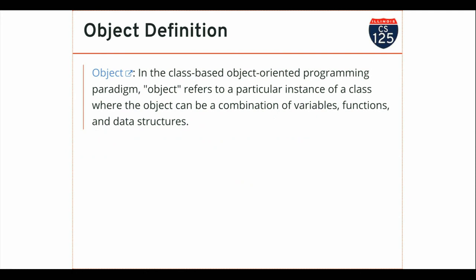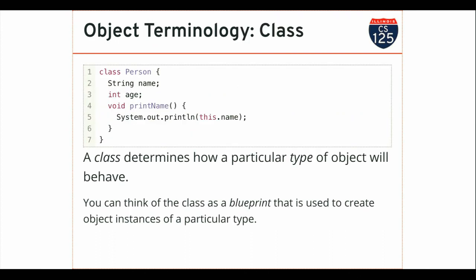Here's the actual object definition. Technically, an object is an instance of a class. A class represents an actual class of objects in the world — a certain type of thing that we're going to work with. An object represents one instance of it. So if, for example, person or student is a class, every one of you is an individual student, an instance of a student. An object can be a combination of variables, functions, and data structures — really, state and behavior, data and algorithms.